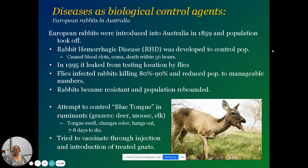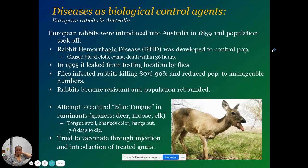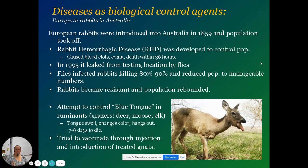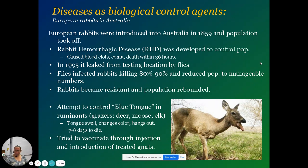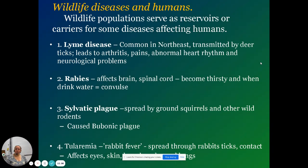We've tried vaccinating wild organisms through injections, but it wasn't successful either — you just can't get enough of them to create herd immunity. We know that wildlife populations carry diseases that can affect us: Lyme disease, rabies, sylvatic plague, which caused the bubonic plague.